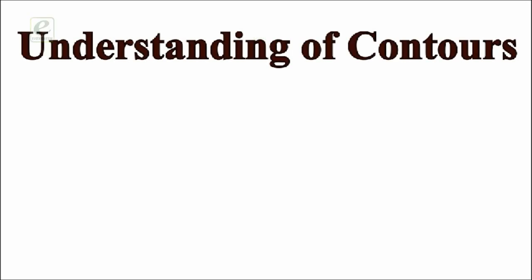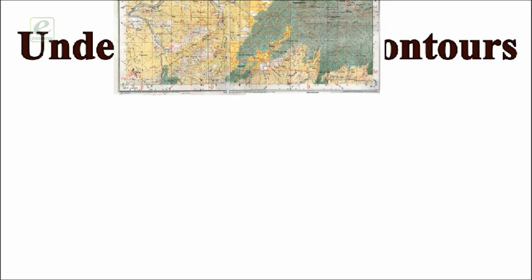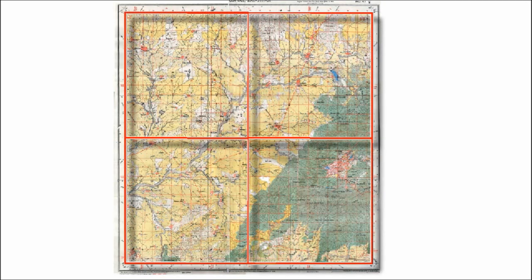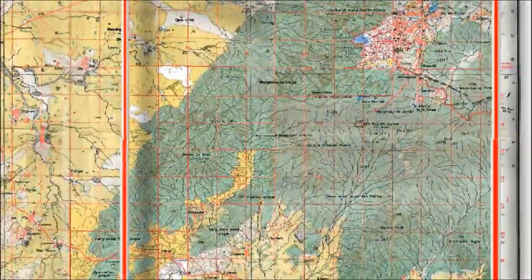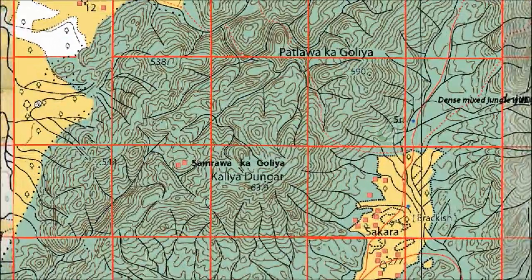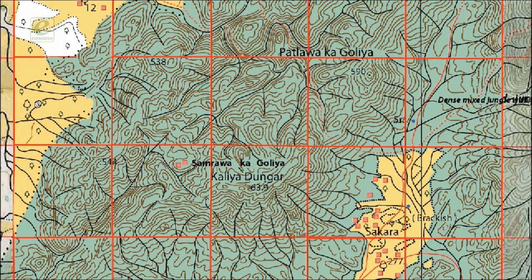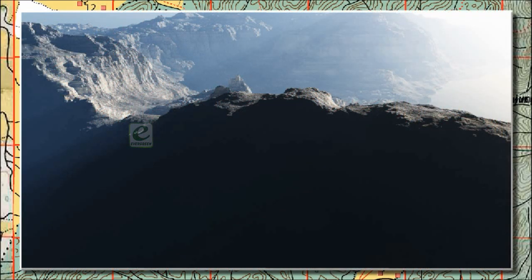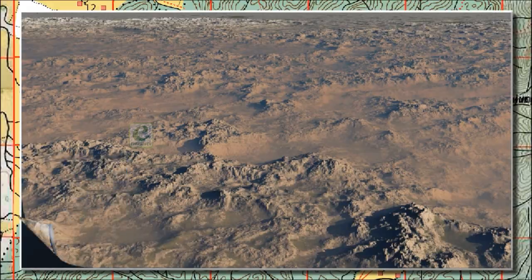Let's observe topo sheet G43S/10. Look at this sheet carefully. In this sheet, in the southeast quadrant, contours are closely spaced and at places these are merging with each other, which shows that it is a hilly area or it represents the hilly topography.